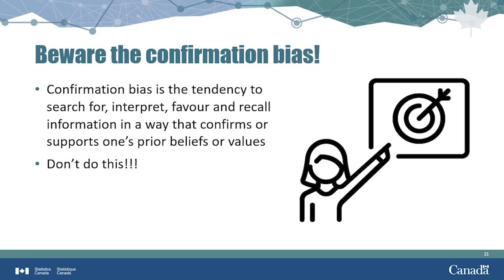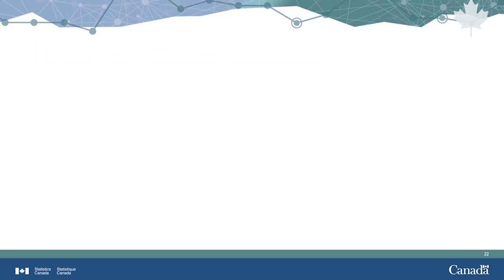Similar to how the human mind loves to see patterns, it also tends to more easily accept evidence that agrees with existing beliefs rather than that which refutes them. This is called confirmation bias. So when analyzing your data, it is very important to scrutinize conclusions you like just as rigorously as ones you don't, in order to avoid claiming a causal relationship exists between two things when in fact it does not.